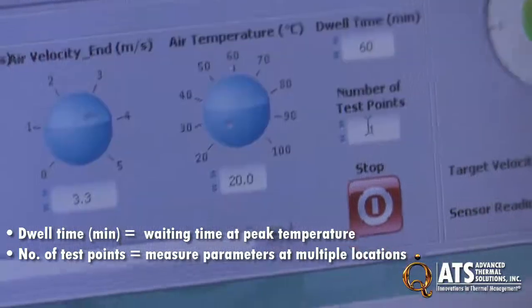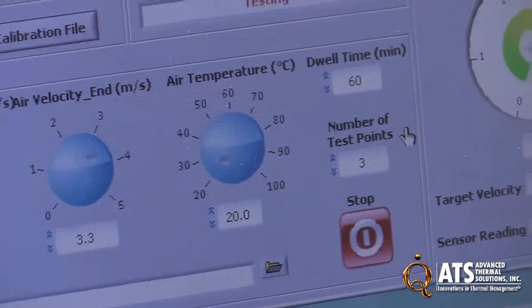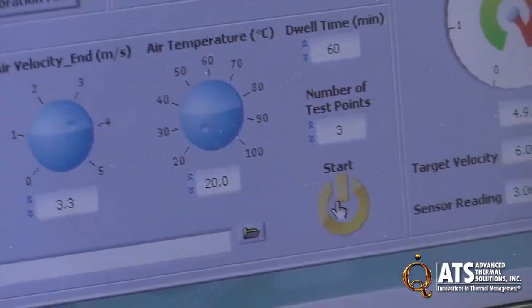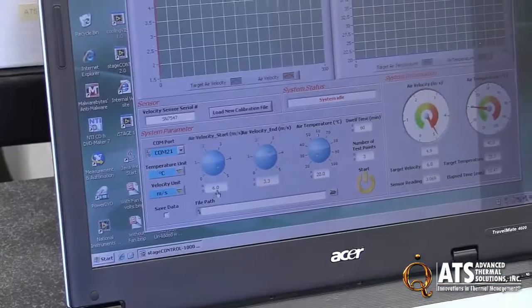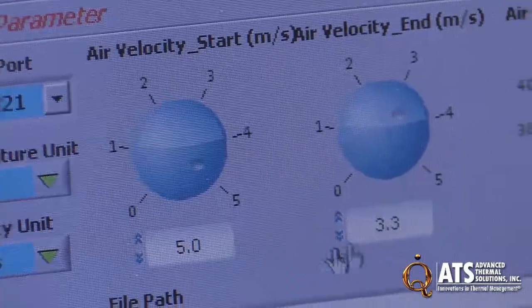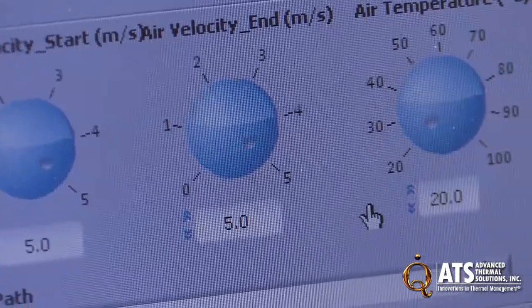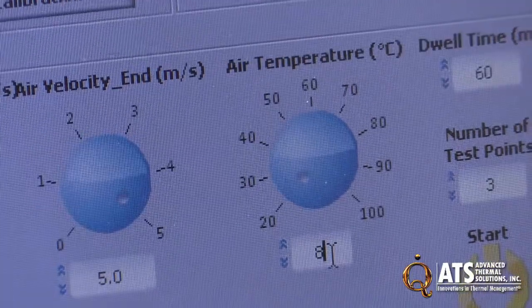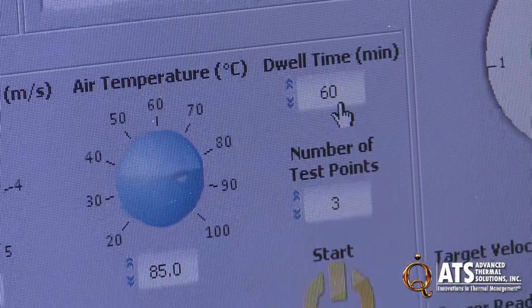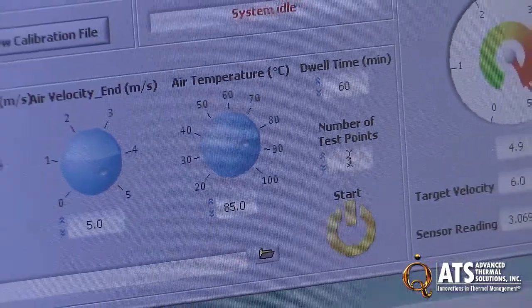As a simple example, I'm going to set the wind tunnel to 5 meters per second because the maximum velocity in this wind tunnel is about 5. I'll put the endpoint at 5 just to make it quick, and I'll put 85 degrees C as the temperature we'd like to reach. I'll put 60 minutes, which means it's going to run once it gets to 85 degrees and stays there for 60 minutes until it stops. Then just one point.